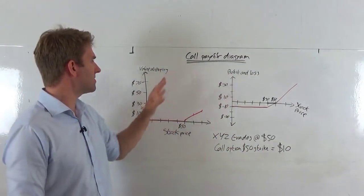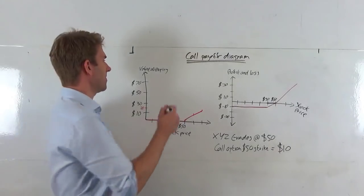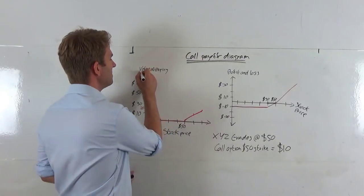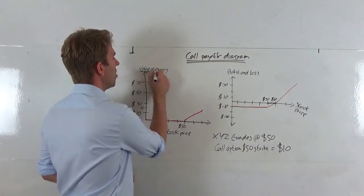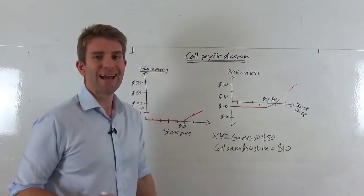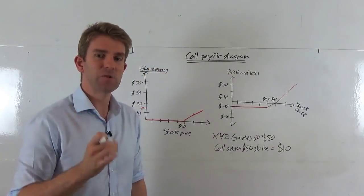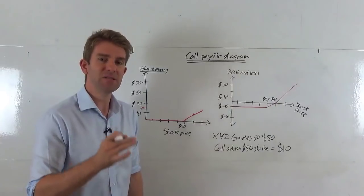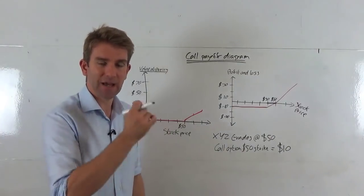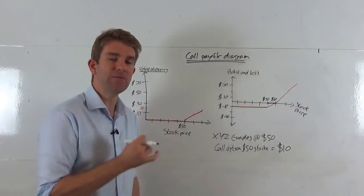We've got two diagrams here. One is the value at expiry — this is the value of the option at expiry. It doesn't take into account what you've paid for the option.